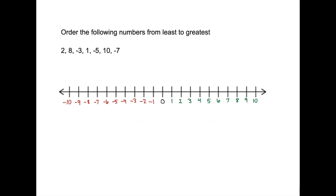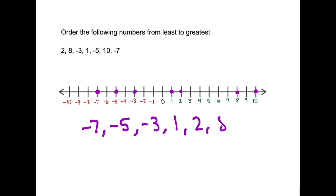Now pause the video and try this next one on your own. Now let's see how you did. The first step is to plot the numbers. We have 2, 8, negative 3, 1, negative 5, 10, and negative 7. Now we can easily see the order from least to greatest: negative 7 is the smallest, then negative 5, then negative 3, and then 1, 2, 8, and 10. Now our numbers are in order from least to greatest.